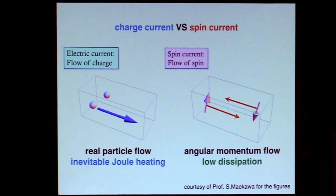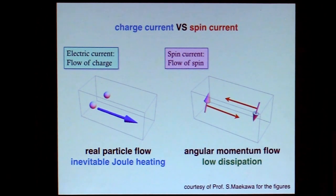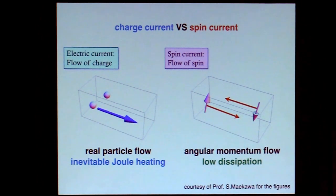Spin current actually appears to be a quite attractive solution for this heating problem. When charge current flows, you inevitably get Joule heating. But for spin current, spin-up goes one way and spin-down goes the other way, so the angular momentum flow conceptually costs much less energy.